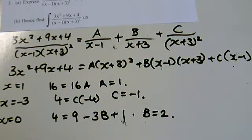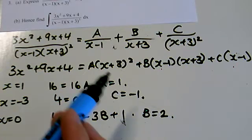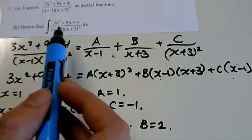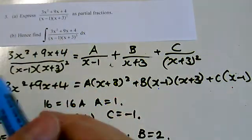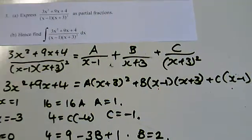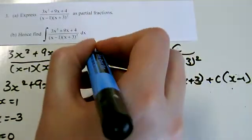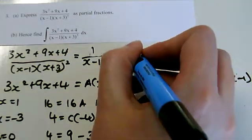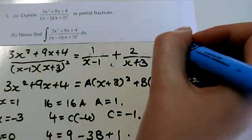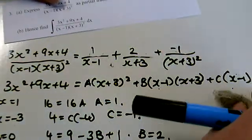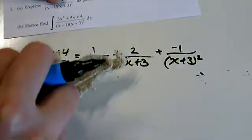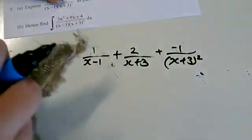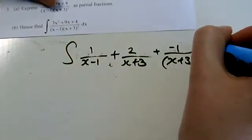OK, so let's move on to part B then, and we need to integrate this. And you'll probably see that this part here is the same as what we just split into partial fractions above it. So we're going to use what we've just done. So if I make the integral 1 over x minus 1 plus 2 over x plus 3 plus minus 1 over x plus 3 squared dx.